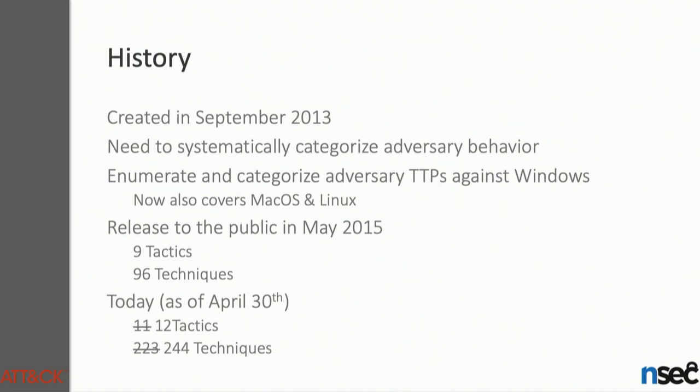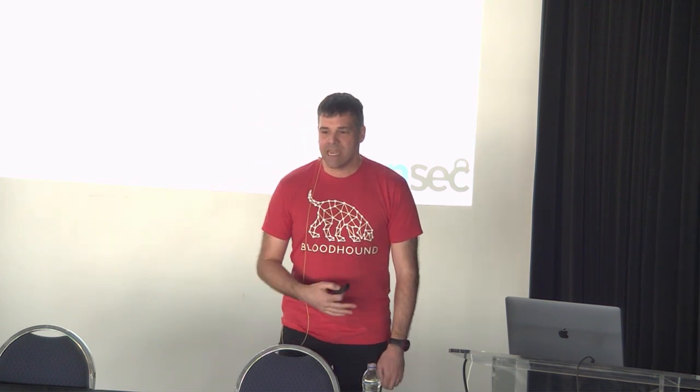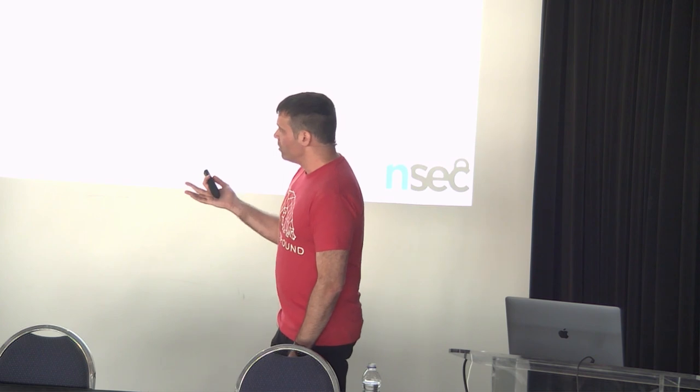A little bit about the history of ATT&CK — it was created in September 2013 as a need to systematically categorize adversary behaviors. It used to enumerate and categorize adversary TTPs only against Windows. Now it also covers macOS and Linux, and iOS and Android devices in the mobile version. It was released to the public in May 2015. It used to contain nine tactics and 96 techniques. As of April 30th, there are 12 tactics and 244 techniques — when I wrote the slide there were 11 tactics and 233 techniques, so you can see that it evolves rapidly.